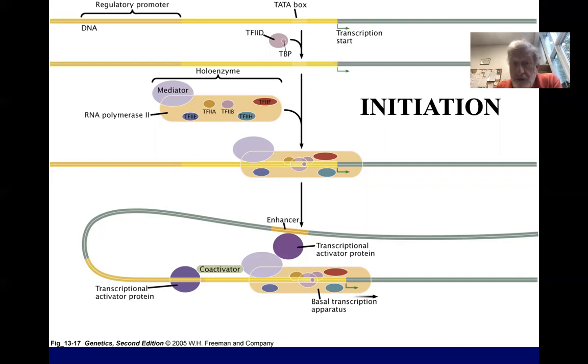And the TF things are all various transcription factors. And remember, there are enhancers too, which are DNA sequences, which can be pretty far from the gene. So the DNA has to bend around in order for the enhancer and its transcription factors to interact with the transcription apparatus.